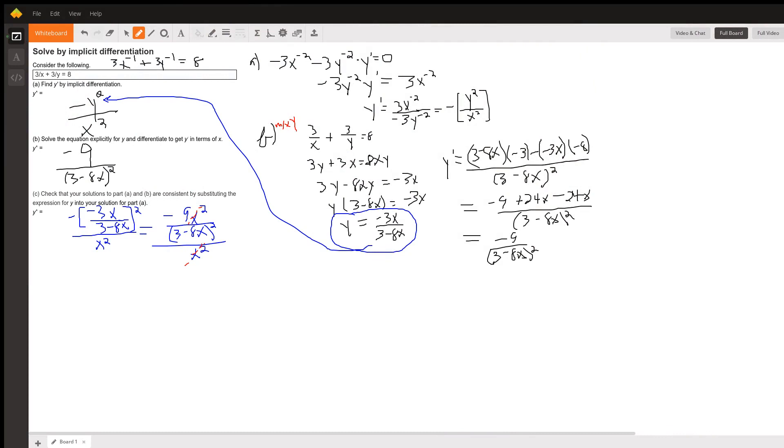Okay, here we go. I have rewritten the original equation as 3x to the minus 1 plus 3y to the minus 1 equals 8 to make it easy to use the power rule to take the derivatives.